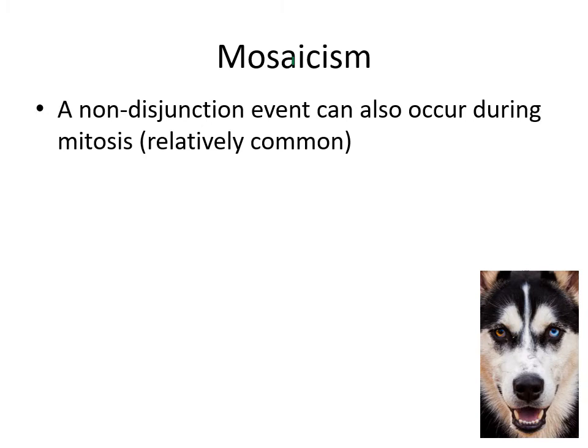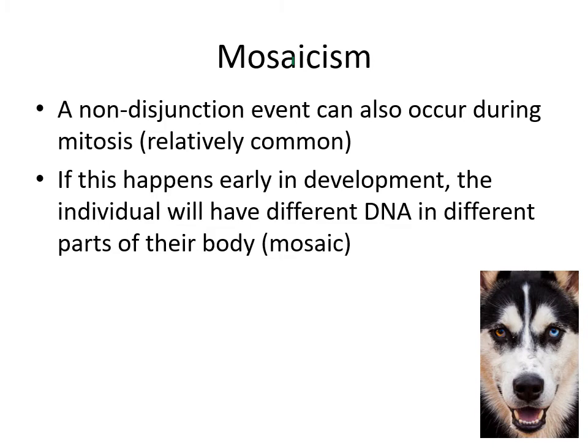Mosaicism is a non-disjunction event that occurs during mitosis, and this is relatively common. Very rarely would you notice it unless the outcome actually affected the phenotype or the visible traits of the individual. If it happens early in development, parts of the individual organism's body could actually be reading different DNA, because as their cells divide, some cells may end up with certain chromosomes that others do not have.